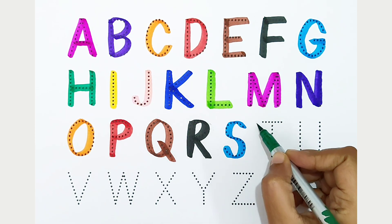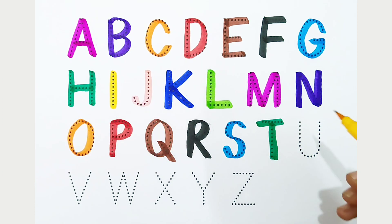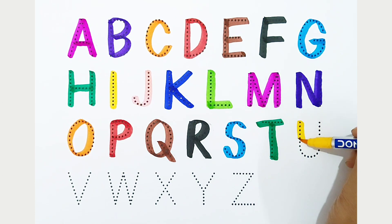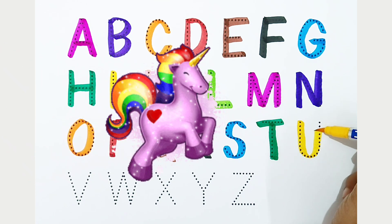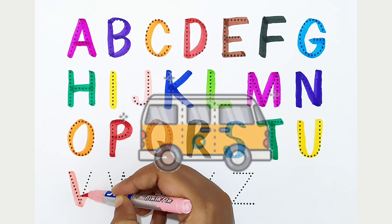T, dark green color, T is for tent. U, yellow color, U is for unicorn. V, light pink color, V is for van.